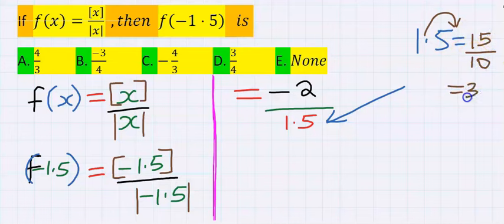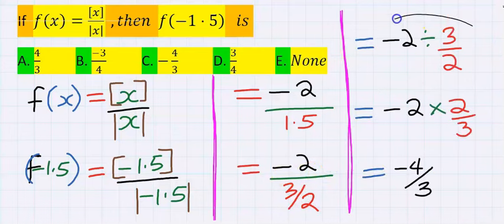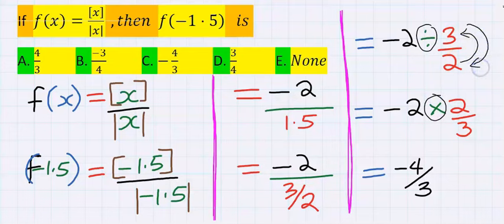Hence, here we are going to have minus 2 divided by 3 over 2. When you change division sign to multiplication sign, it's going to flip the denominator to the numerator and the numerator to the denominator. And here our answer is minus 4 over 3.